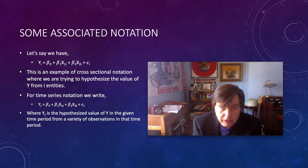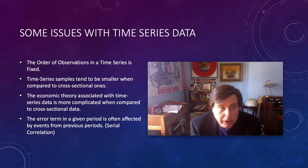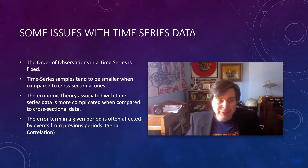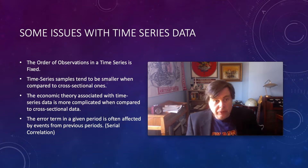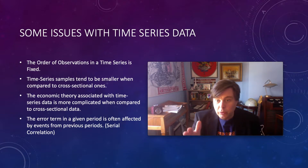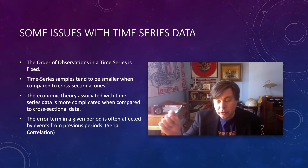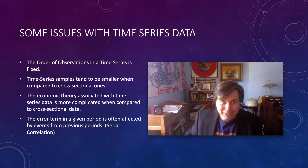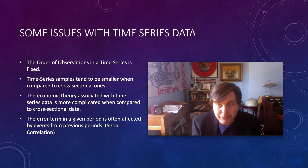There are a number of issues encountered in time series analysis that are more significant compared to cross-sectional analysis. First, the order of observations in time series is fixed — we have t, t+1, t+2, t+3, and so on. Observations are all slotted into a particular point along a unidirectional moving time, which is a constraint we haven't had to deal with so far.